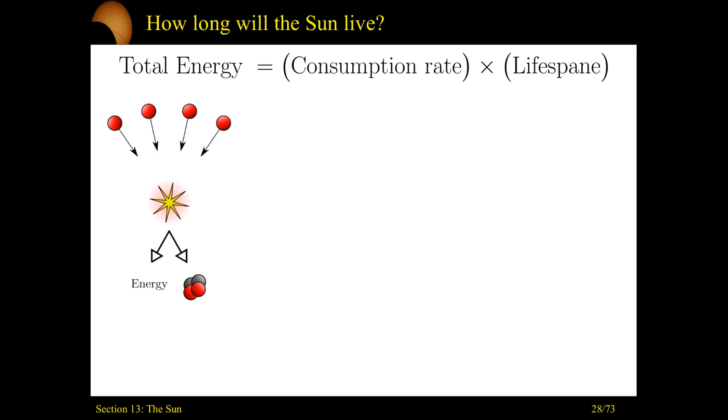What's the lifespan of the sun? How long it's going to last? Straightforward calculation. How much energy does the sun have? What's the consumption rate? How quickly it's consuming that? So the rate it's consuming times however long it's going to live is equal to the total energy of the sun. So let's just break these things down term by term.